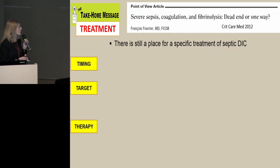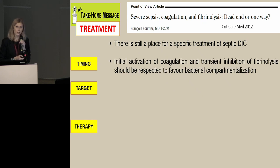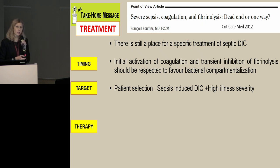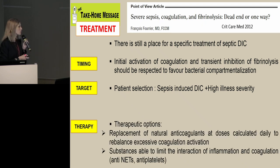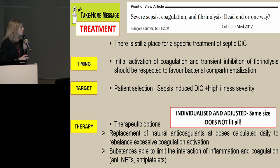There is a place for specific treatment of sepsis-induced DIC, but we must respect important considerations such as timing — we must respect the initial activation of coagulation and immunothrombosis because it helps immune defense. We must target patients with sepsis-induced DIC and high disease severity, and we need adequate treatment: replacement of natural anticoagulants such as antithrombin or thrombomodulin, or substances capable of limiting the interaction between inflammation and coagulation. This treatment must be individualized and adjusted.